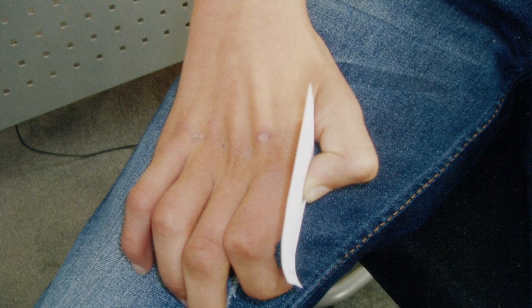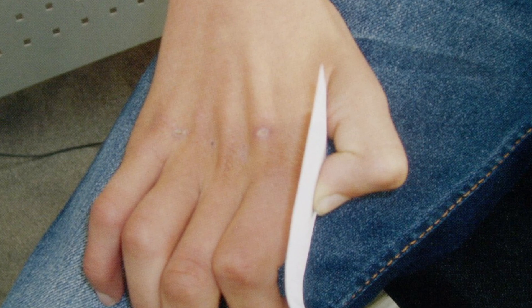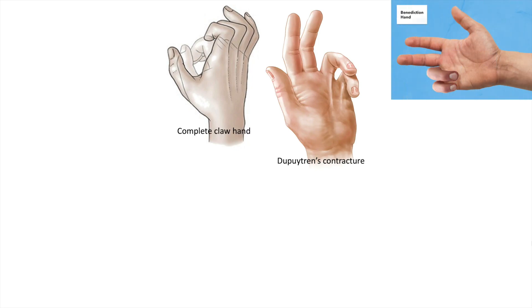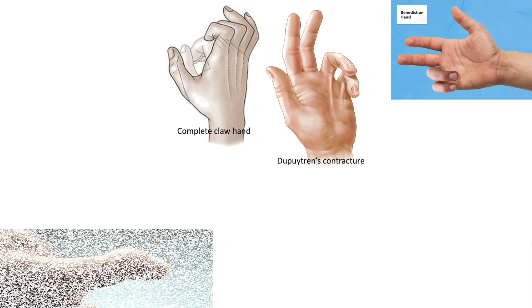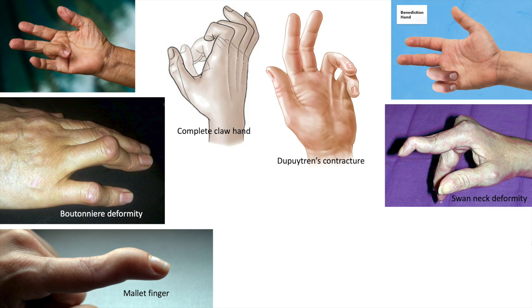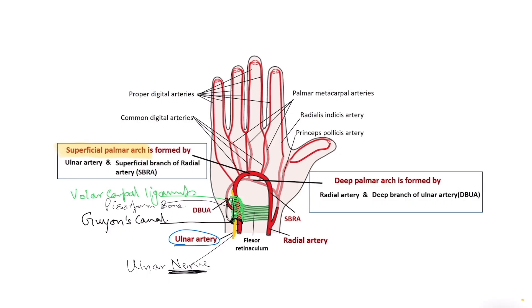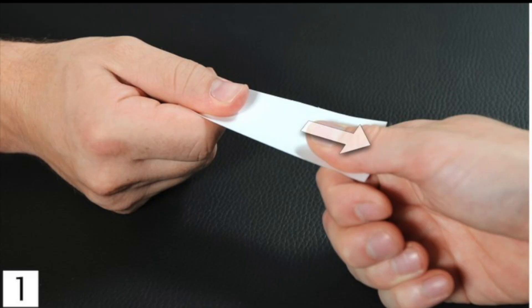How to diagnose ulnar claw hand? You must have read about many other conditions with clawing of digits: Dupuytren's contracture, complete claw hand in Klumpke's paralysis, hand of benediction, mallet finger, swan neck digits, boutonniere deformity, trigger finger, pointing index finger, ape thumb deformity, hitchhiker's thumb deformity. There are so many digital deformities. So how to confirm whether it is Guyon's canal syndrome?